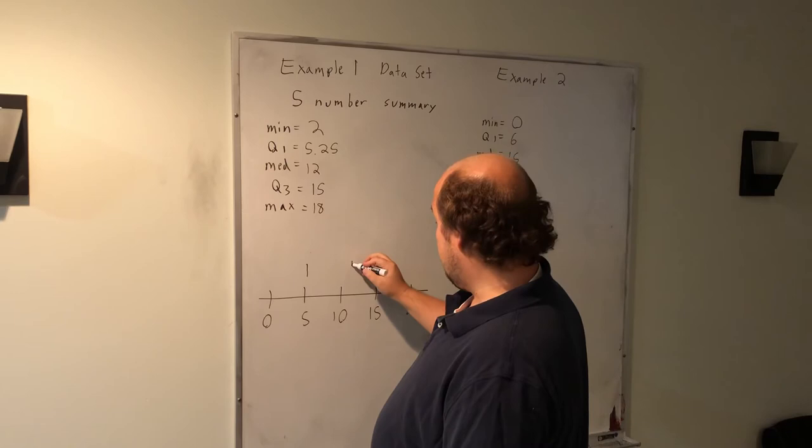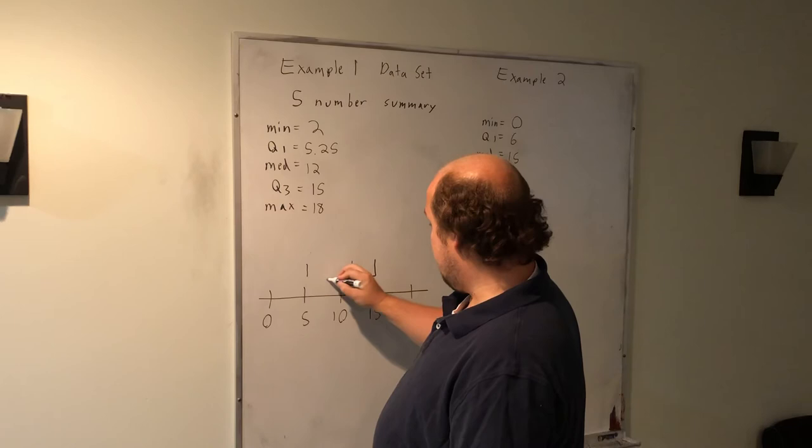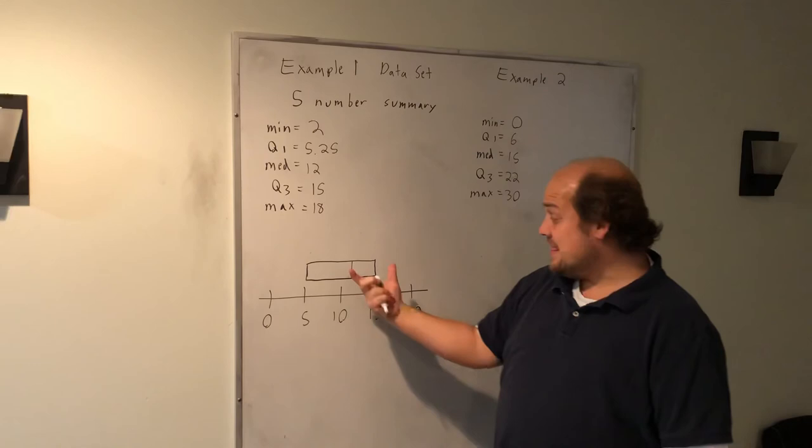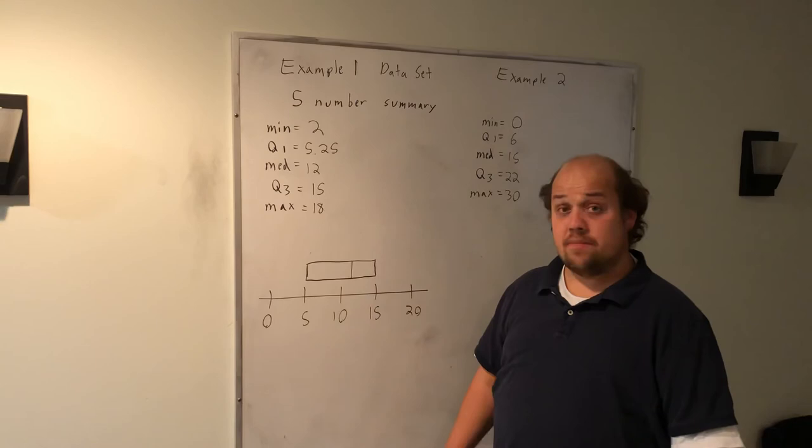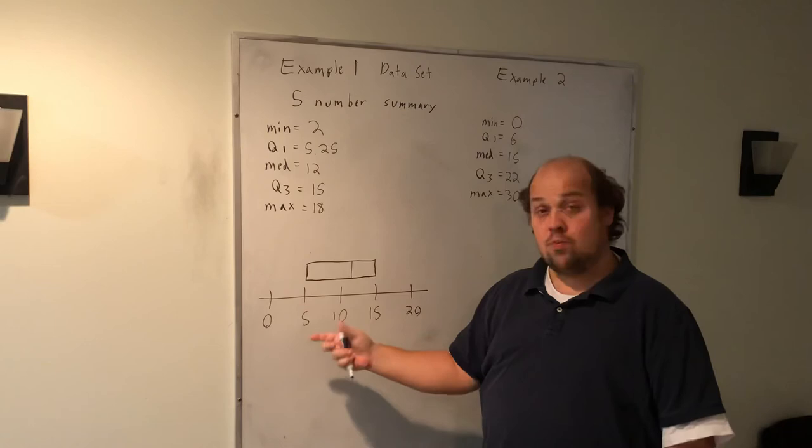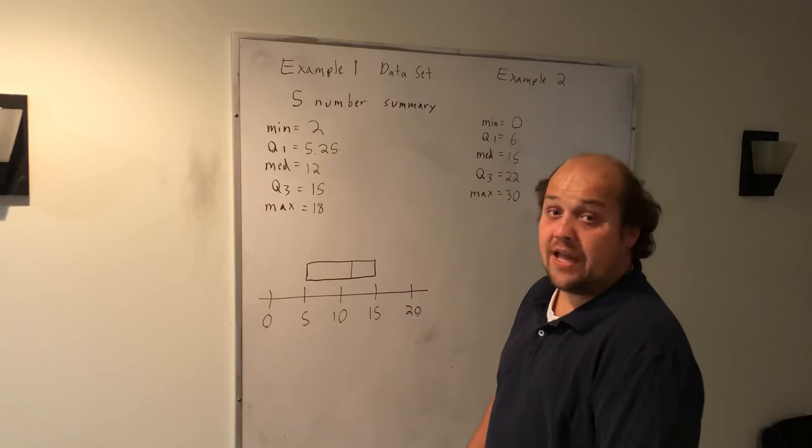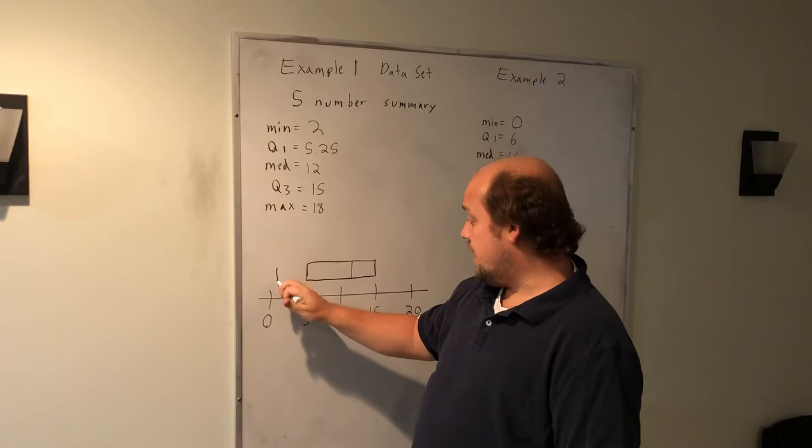When I now go to put in Q1, 5.25 is slightly to the right of 5. Median of 12 is to the right of 10. And Q3 is right above this line of 15. I'm then going to make a box where when you see one of these boxes in a box plot, that's the middle 50% of the data I was talking about earlier. This is the median within the middle 50% of the data, but this is my interquartile range, my Q3 minus Q1, that's represented by the box in the middle of a box of whiskers or box plot. 2 and 18 are my min and max. So I'm going to put a line here around 2, a line here around 18, and connect them to my box.